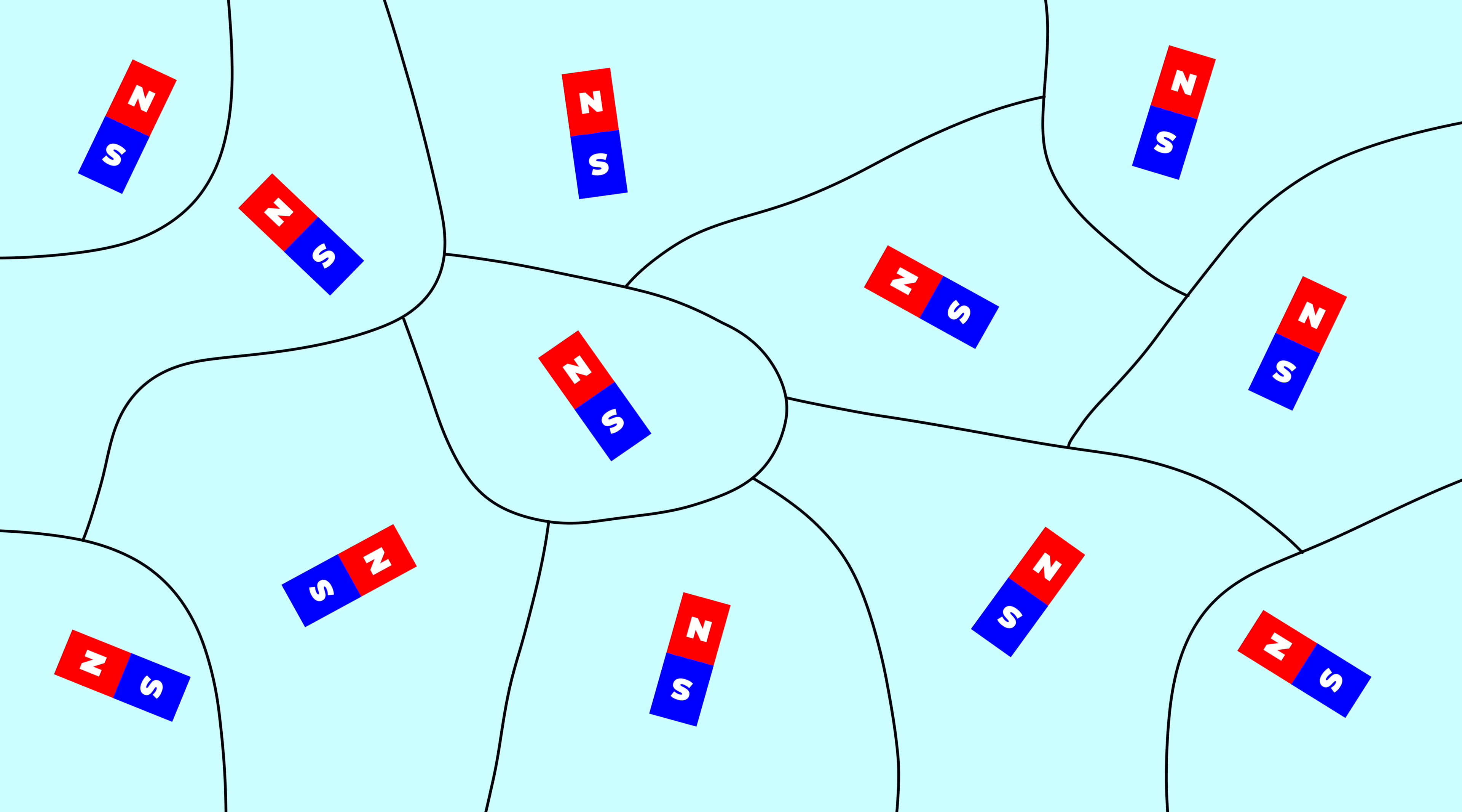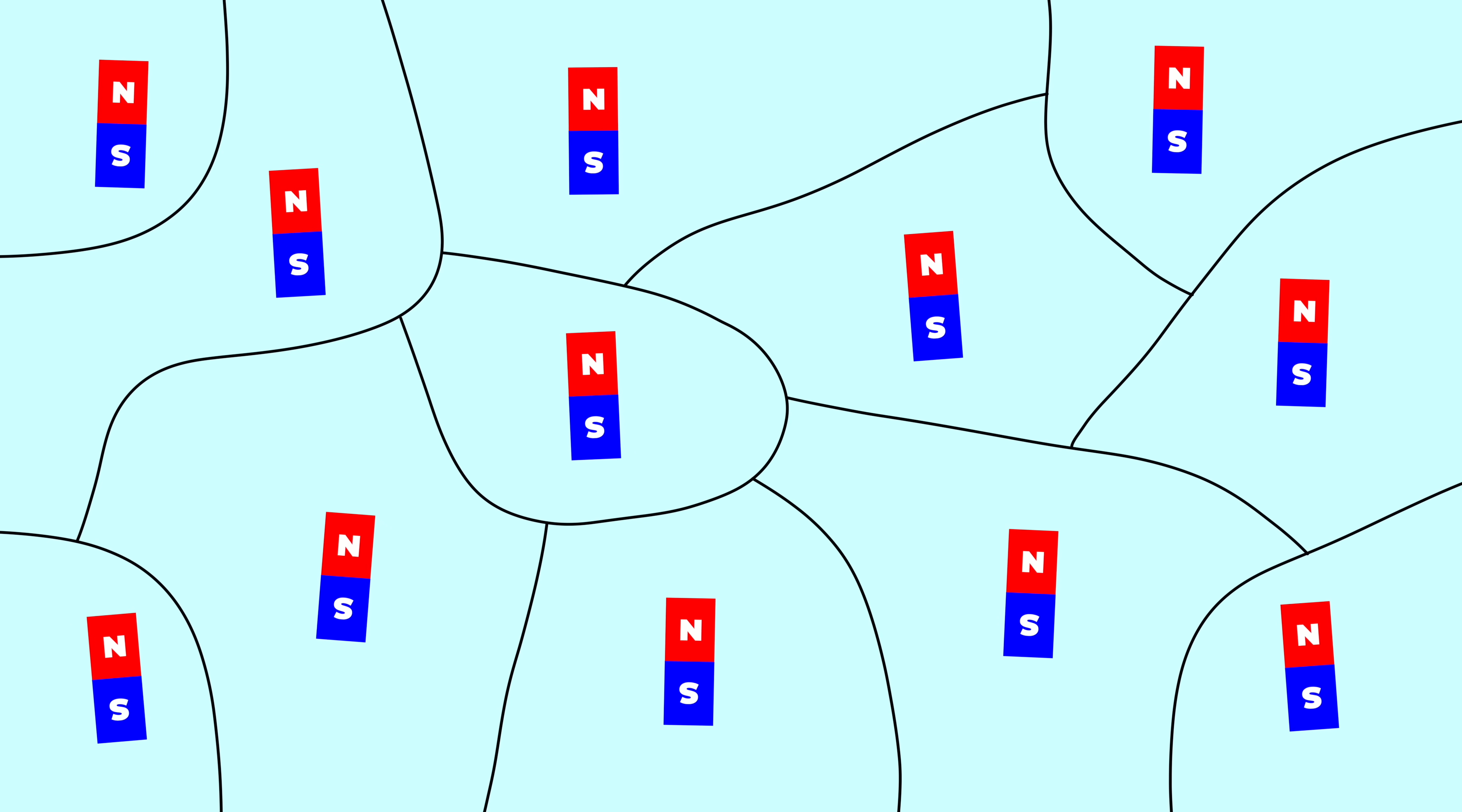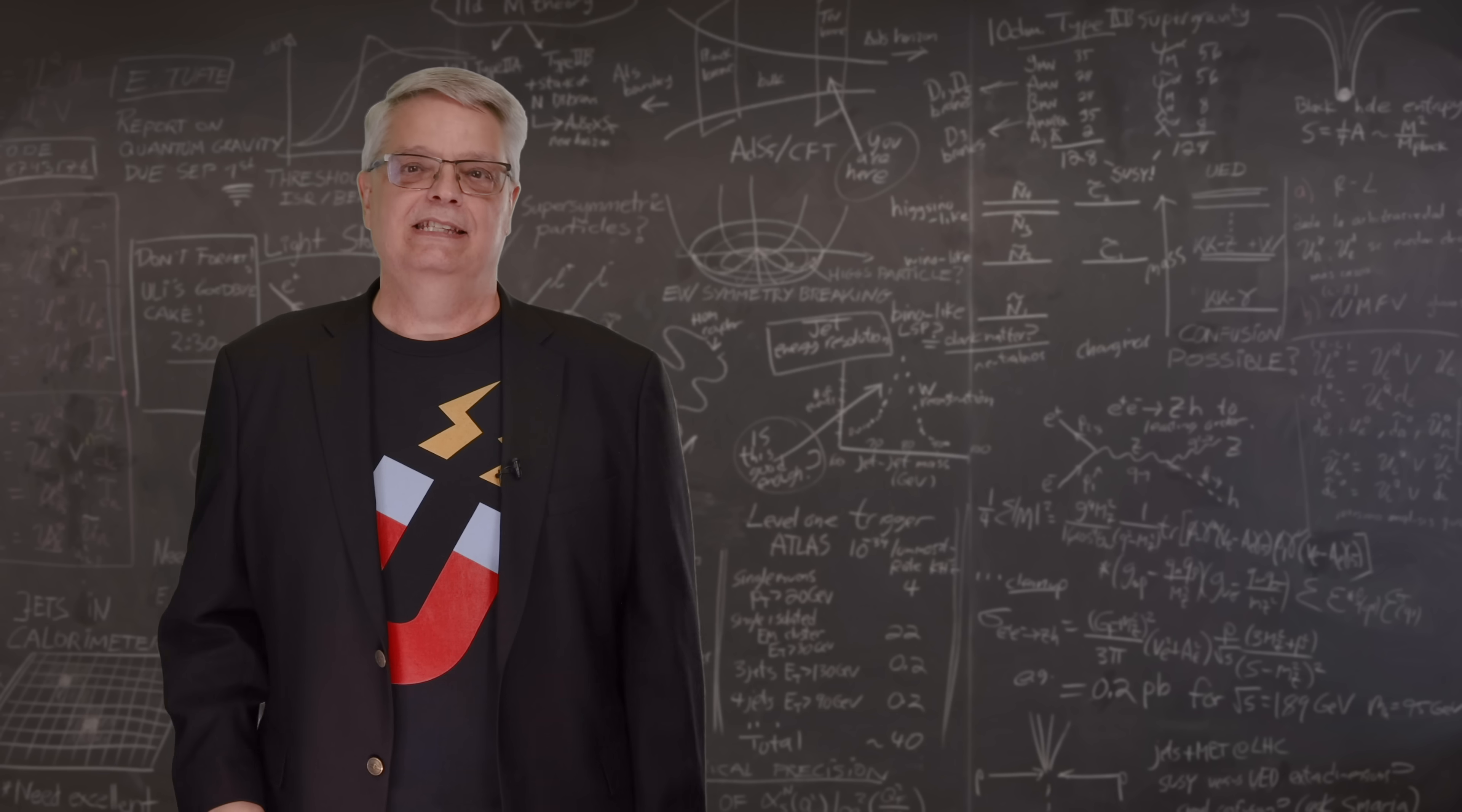One way is to take a piece of iron, which we know contains many magnetic domains, and put it in a strong external magnetic field. That forces all of the domains to point in the same direction, and this turns a piece of iron into a magnet. So that's the basic idea.